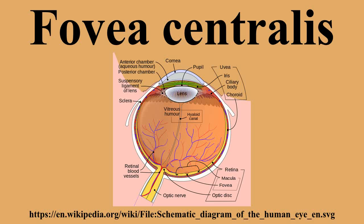Regarding the angular size of foveal cones, on average each square millimeter of the fovea contains approximately 147,000 cone cells, or 383 cones per millimeter.